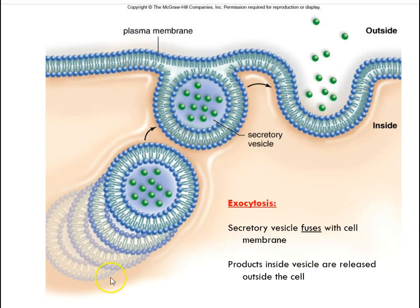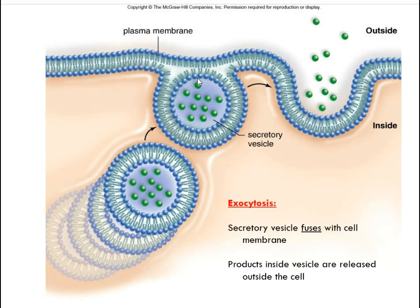The first thing that happens is we create a lipid bilayer. This is going to be a vacuole. This vacuole could have been created by the Golgi apparatus or by the smooth ER, but basically what happens is this lipid bilayer is created around something that it wants to transport. When it goes to the outer membrane, it's going to merge with it and release all of that material outside the cell.